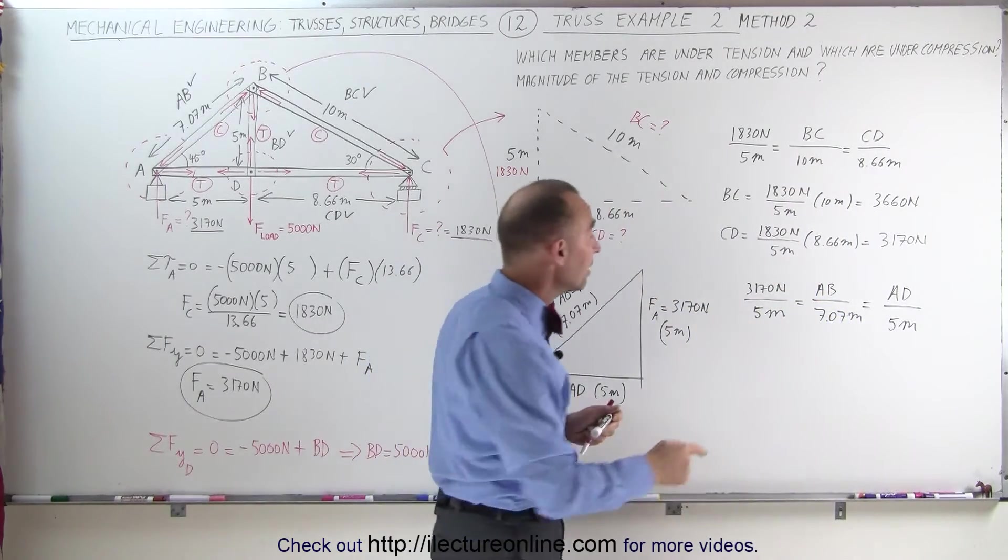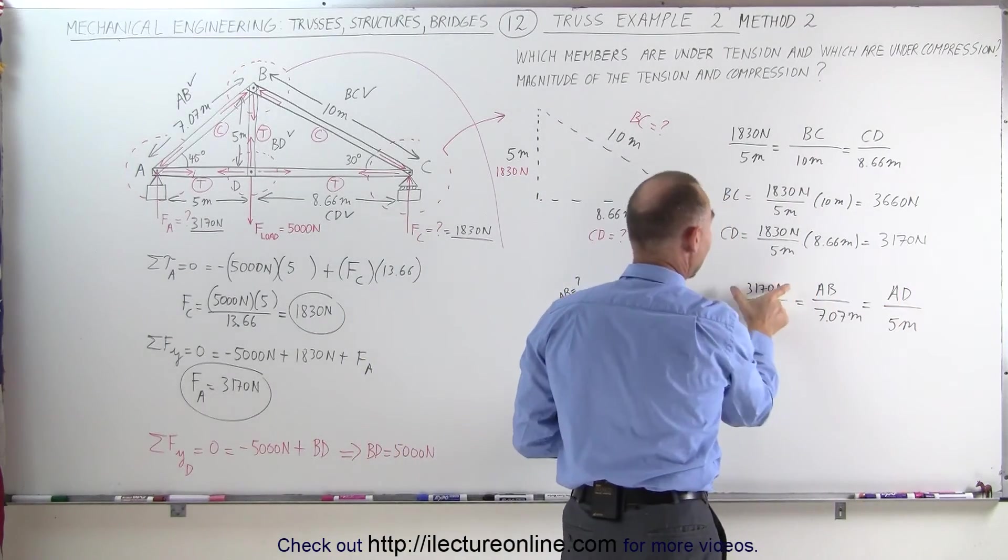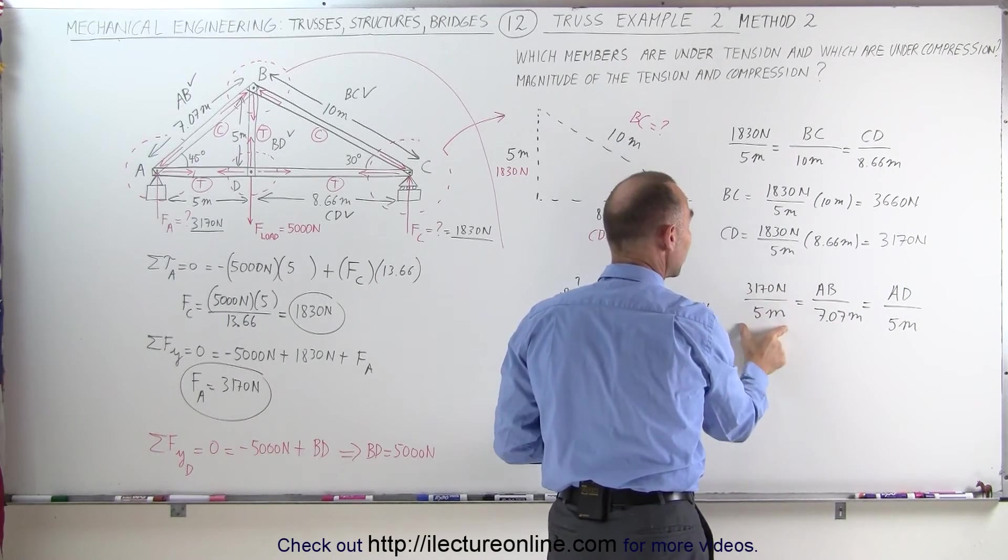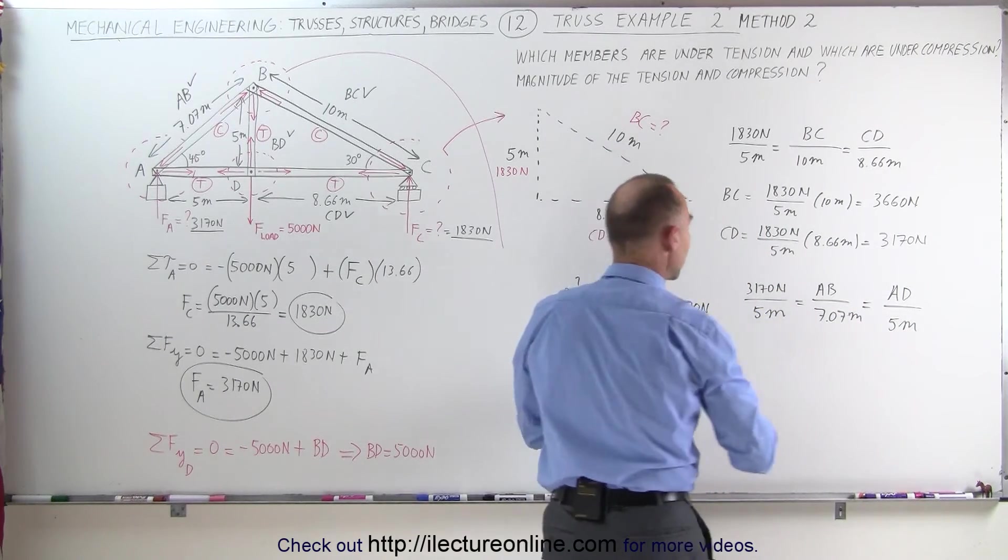Right away you can see that AD must be equal to 3170 newtons because they're both divided by 5 meters. AD therefore is 3170 newtons.